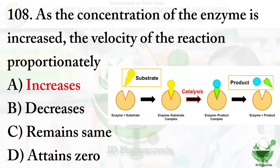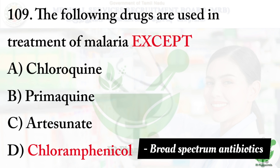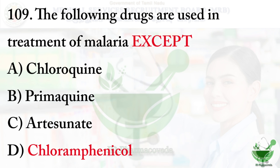Question number 109: The following drugs are used in treatment of malaria except — option A – Chloroquine, option B – Primaquine, option C – Artesunate, option D – Chloramphenicol. The right option is option D – Chloramphenicol. Chloroquine, Primaquine, and Artesunate are used for treatment of malaria. Chloramphenicol is a broad spectrum antibiotic — the two broad spectrum antibiotics are Tetracycline and Chloramphenicol.